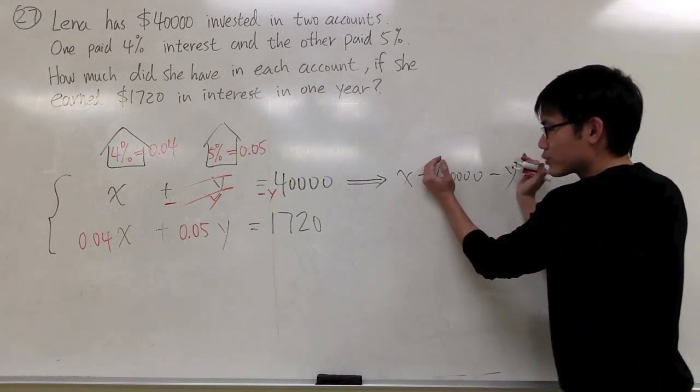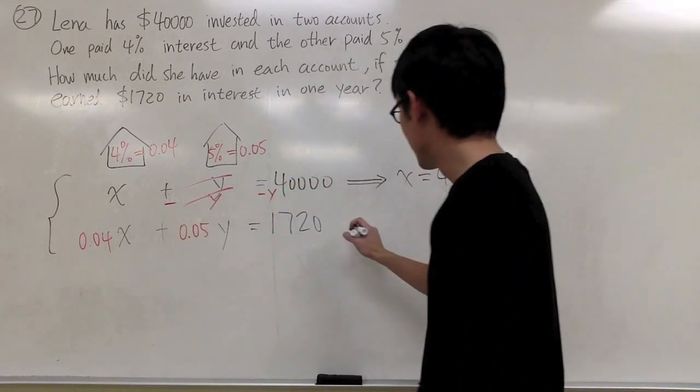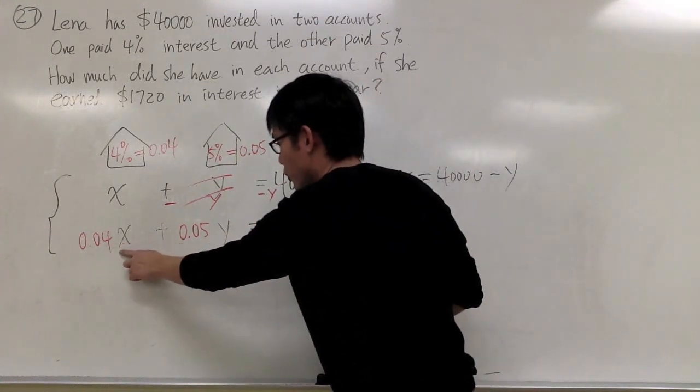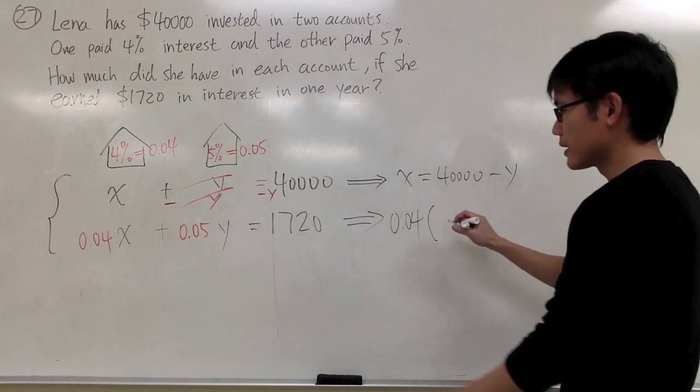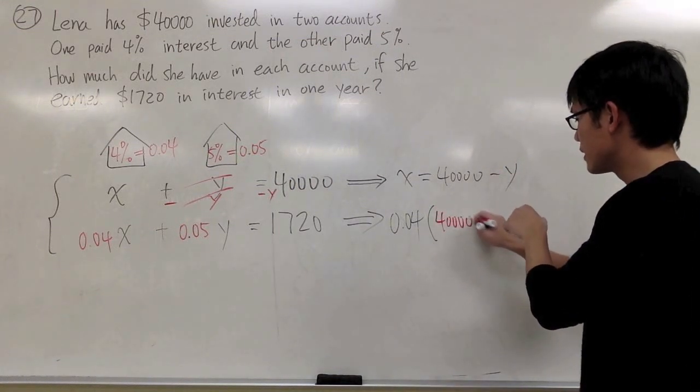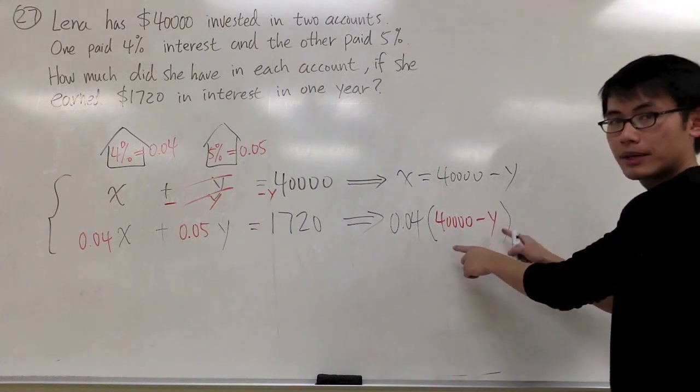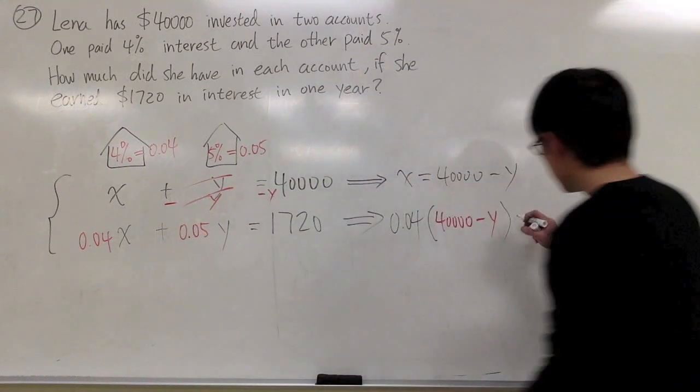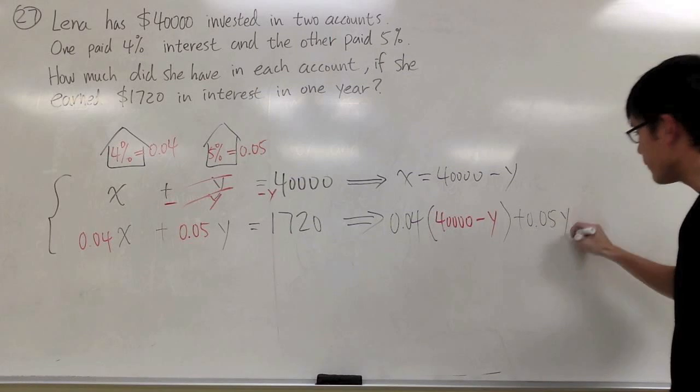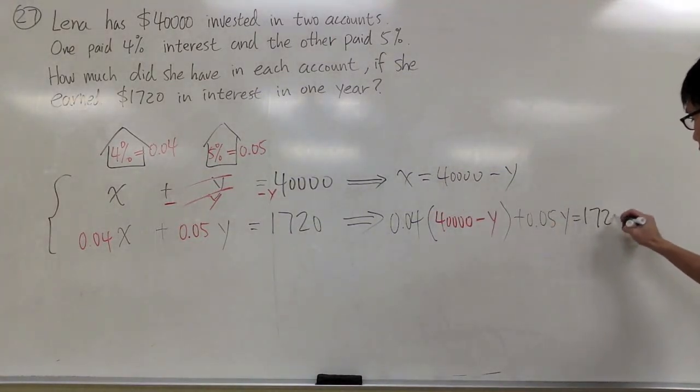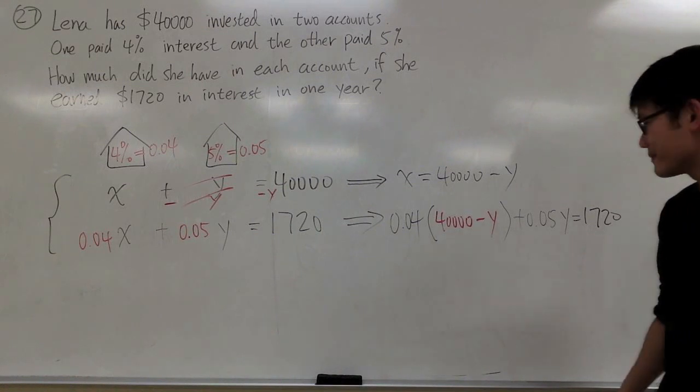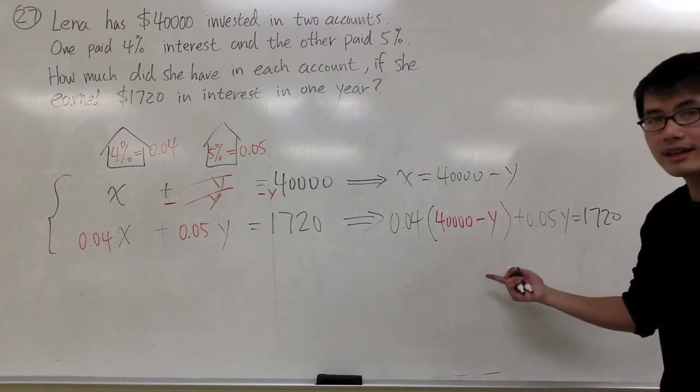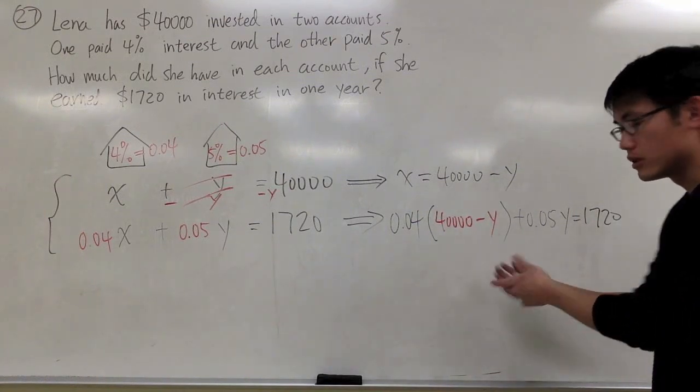And then I can take 40,000 minus y, plug it into this x. So I will get 0.04 times, instead of x, I will put that in parentheses, 40,000 minus y. That will be my new x, because I solved it earlier. And then continue with the second equation, plus 0.05y equals 1720. And now we're just going to look at this equation, because it has just one variable, just the y in this equation.